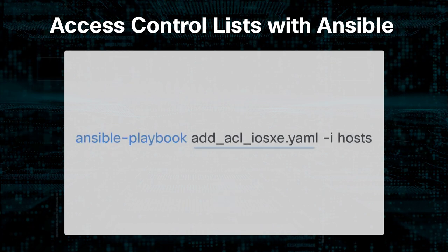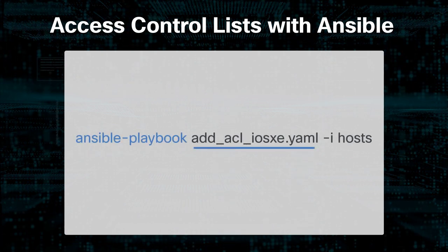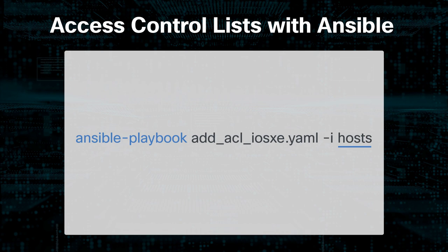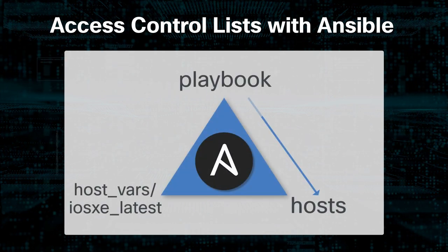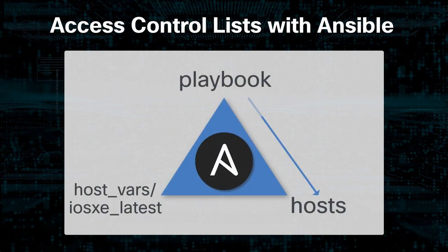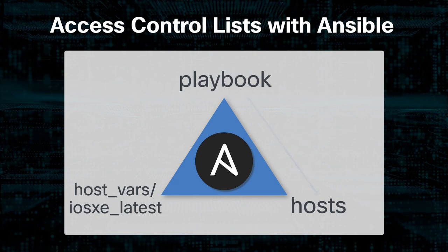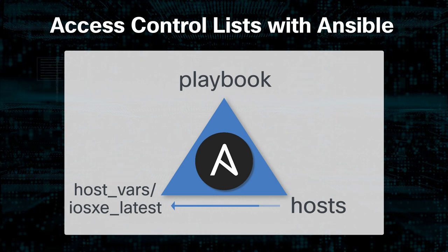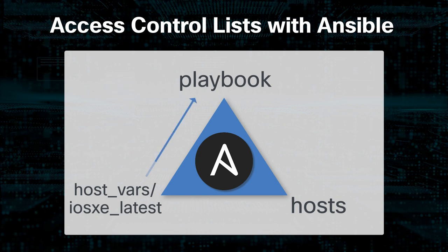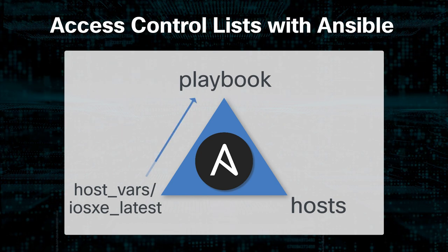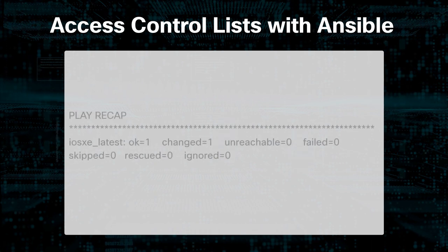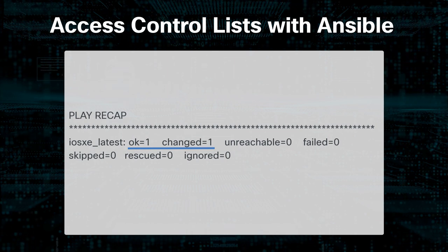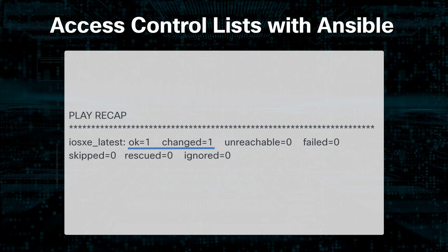The ansible-playbook command is used to run the playbook. We indicate which playbook to run and with the -i or --inventory option specify the inventory host path — in our case, the host file. When we run this command, Ansible will look to the host file to run the playbook against every entry in that file. Since ios-xe-latest is listed there, Ansible will search in the host_vars directory for a file named ios-xe-latest and pull the connection information from there. After running the playbook, the ok field tells us our task was successful and the changed field shows that a change was made.